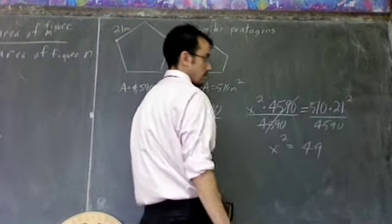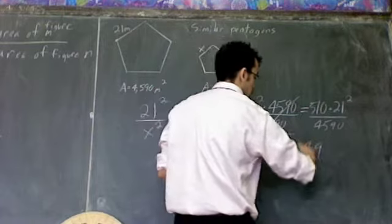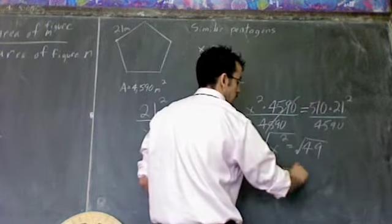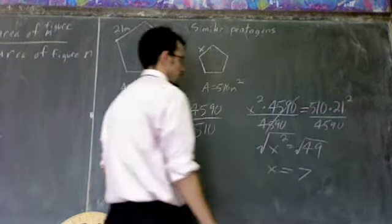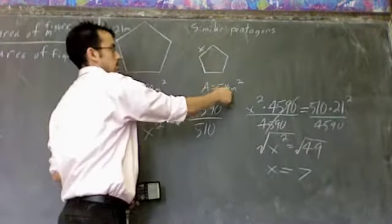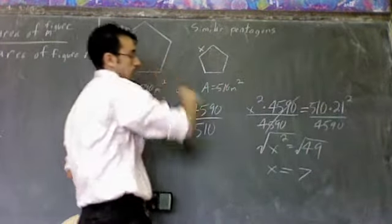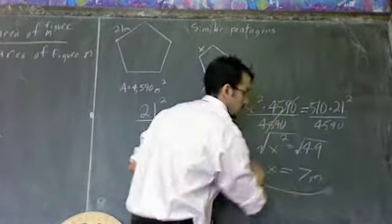And then, just like always, to get rid of a square, you take the square root. And hopefully you remember that the square root of 49 is 7. Since this is a side measure, and this side measure is meters, this is 7 meters for your answer.